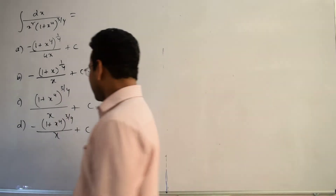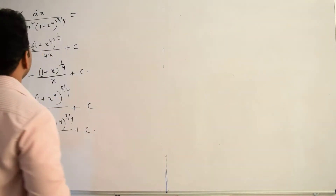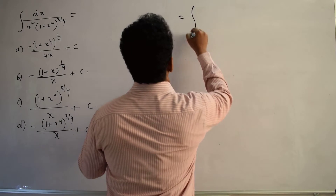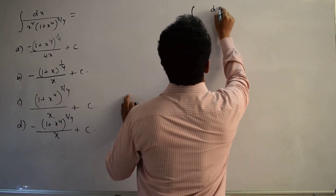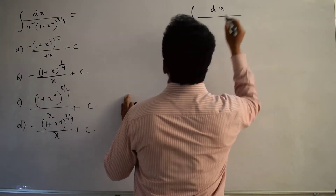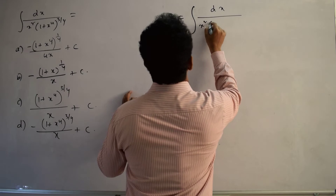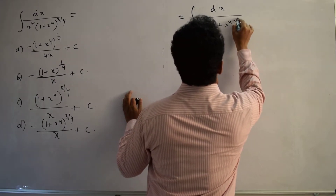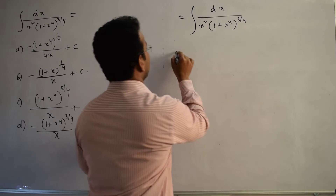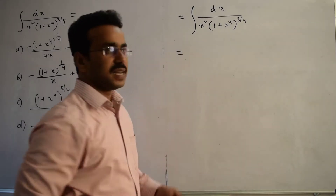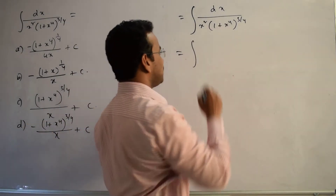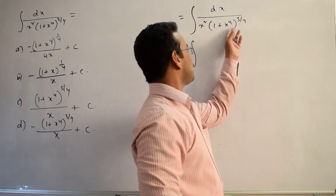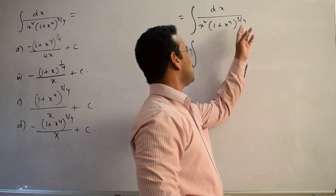Let me write the integral first and then simplify the integrand. The integral is ∫ dx / [x² · (1 + x⁴)^(3/4)]. Notice that in the denominator there is a (1 + x⁴)^(3/4) term.